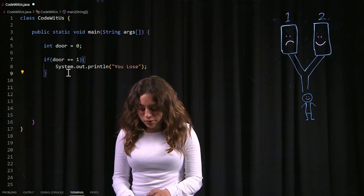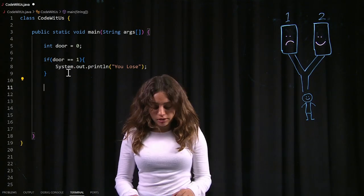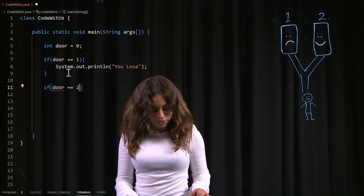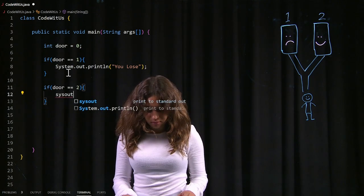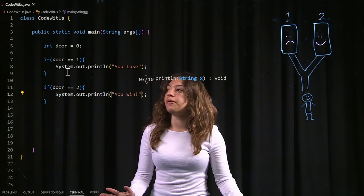Okay, let's move on and code the second door. So if our door is equal to door number two, I'm going to print out you win. And there we go.